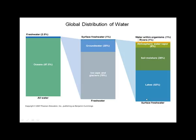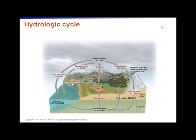Breaking down that one percent of surface fresh water: lakes make up about 50 percent, moisture in the soil about 38 percent, atmospheric water in gaseous form is about eight percent, and rivers — including all the giant rivers like the Amazon, Nile, and Mississippi — make up a small portion. The last portion, about one percent, is water within living organisms, since water makes up a significant part of body mass.